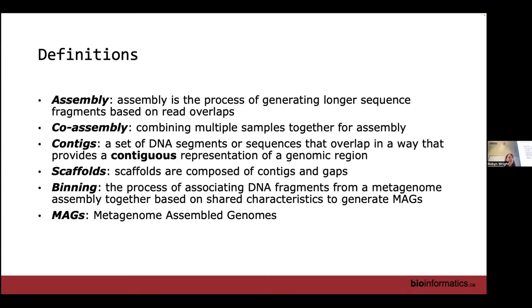Before I get going, I just wanted to give some definitions of the key concepts in making MAGs. What we've been talking about so far is read-based analyses, where we have our raw metagenomic reads and use them directly for taxonomic annotation. Now we'll be looking at assembling those reads into longer sequences based on overlaps between the reads — essentially overlapping all the reads to generate the longest sequences possible, either on a sample-by-sample basis or via co-assembly.